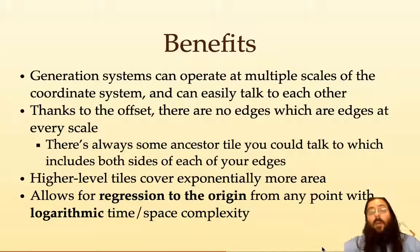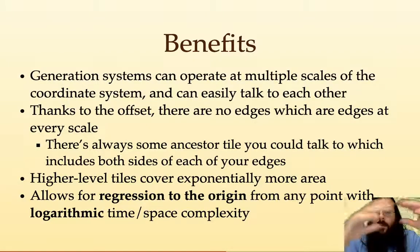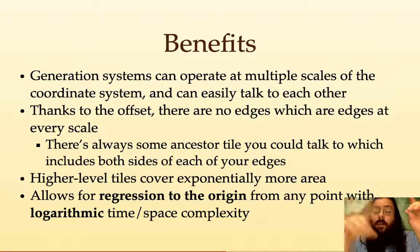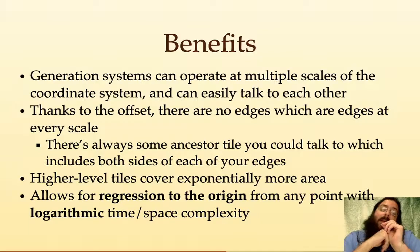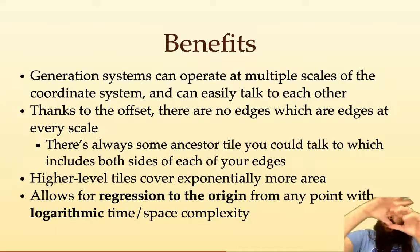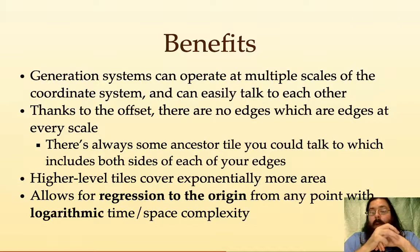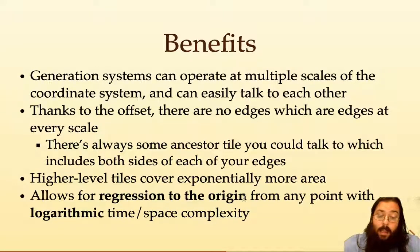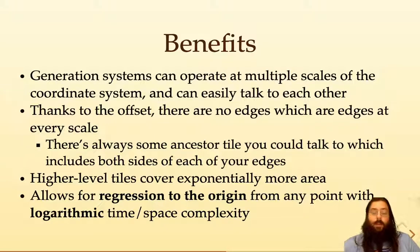What are the benefits of this? People already operate generation systems at multiple scales — you could have a room system at one scale and a smaller scale for generating furniture in the rooms. With fractal coordinates you formalize that and also allow talking between different scales pretty easily. Thanks to that offset, there are no edges which are edges at every scale, meaning that eventually if you ask your parent's parent's parent, there will be some tile that contains both you and all of your neighbors. Higher-level tiles cover exponentially more area, so we don't need many layers, and we can regress to the origin from any point with logarithmic time and space complexity.